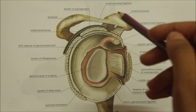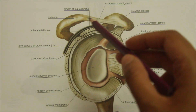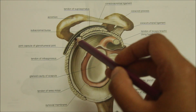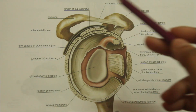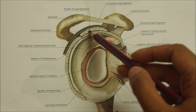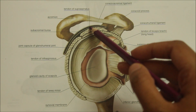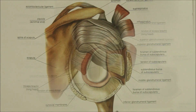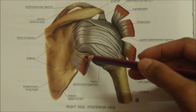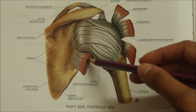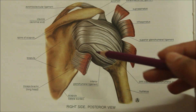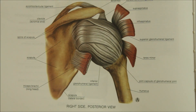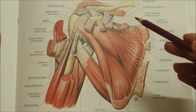Superiorly, the shoulder joint is related to the coracoacromial arch, the subacromial bursa, the supraspinatus muscle — you can see the tendon of the supraspinatus here — and the deltoid muscle. Inferiorly, the shoulder joint is related to the long head of the triceps, the axillary nerve, and the posterior circumflex humeral artery.